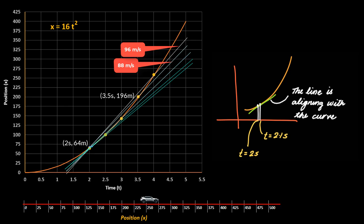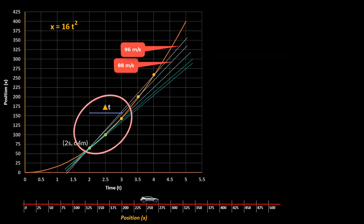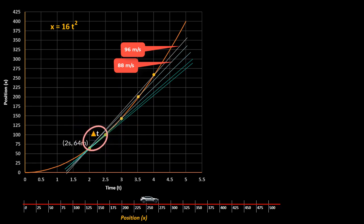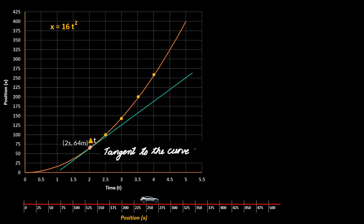You can find the average velocity between 2 seconds and 2.01 seconds, then between 2 seconds and 2.001 seconds, then 2 seconds and 2.0001 seconds, and so on. Delta t can keep reducing — in mathematical terms, we say the limit of delta t is approaching 0. And as delta t approaches 0, you observe that this straight line actually becomes a tangent to the curve at t = 2 seconds.